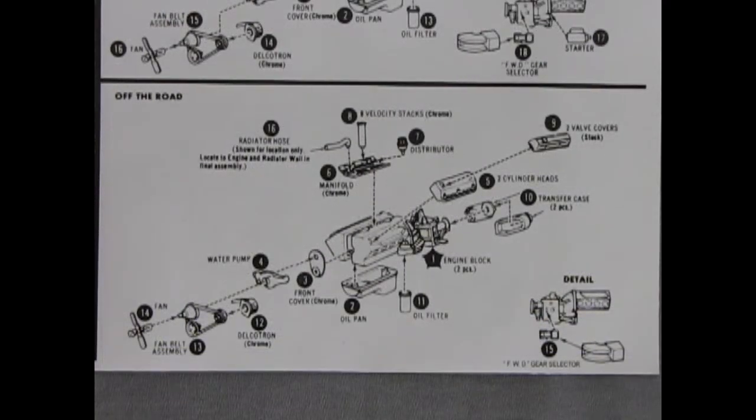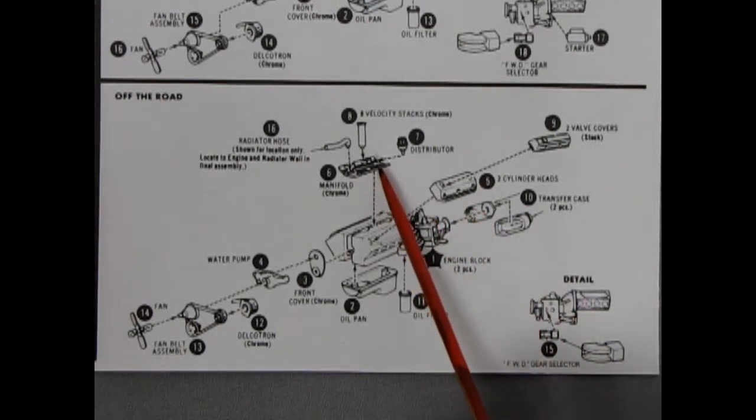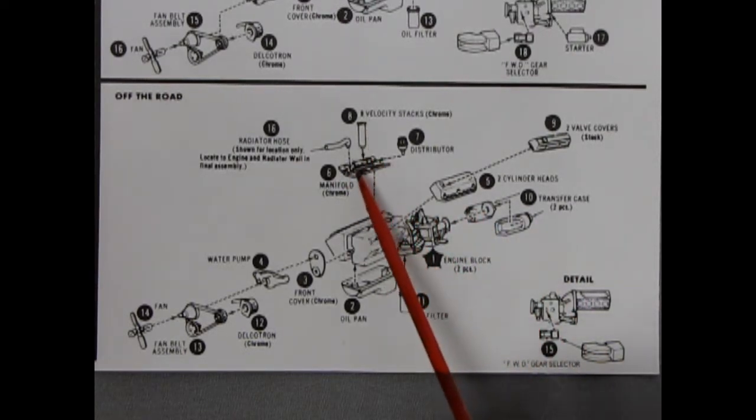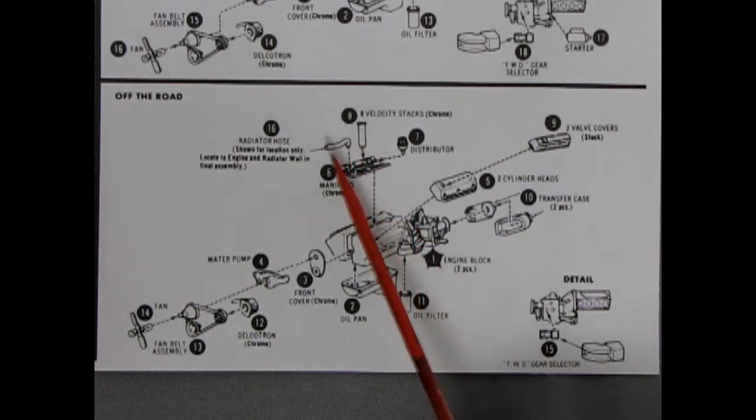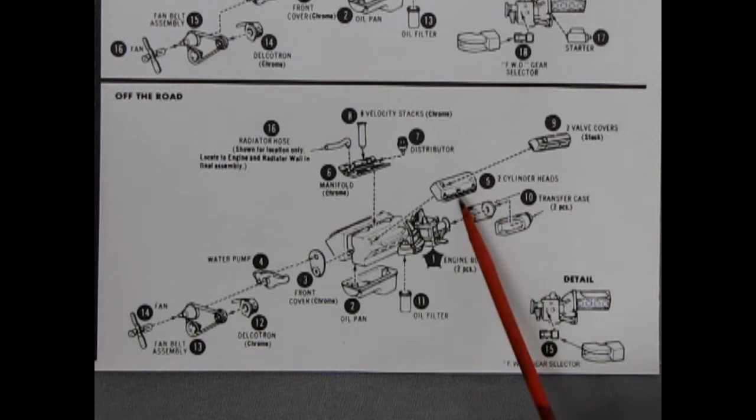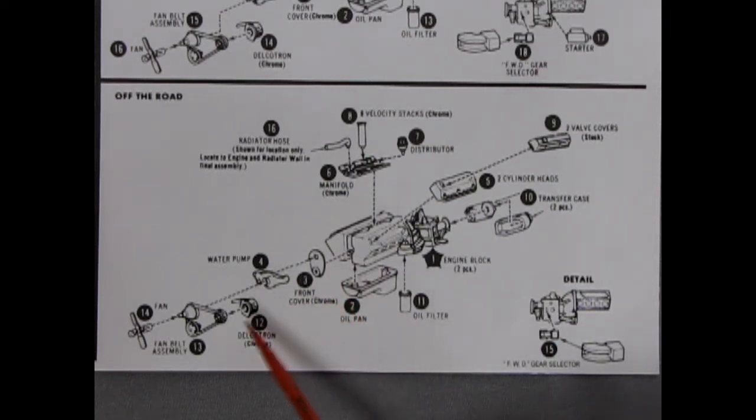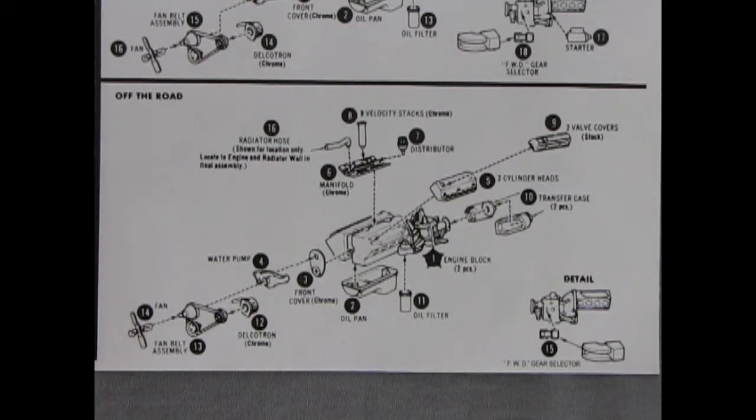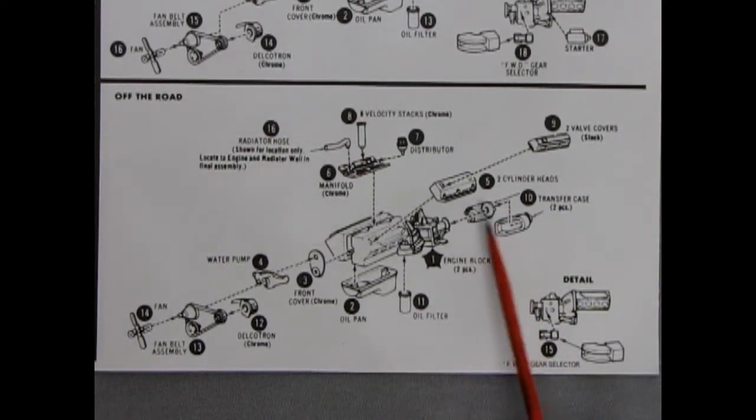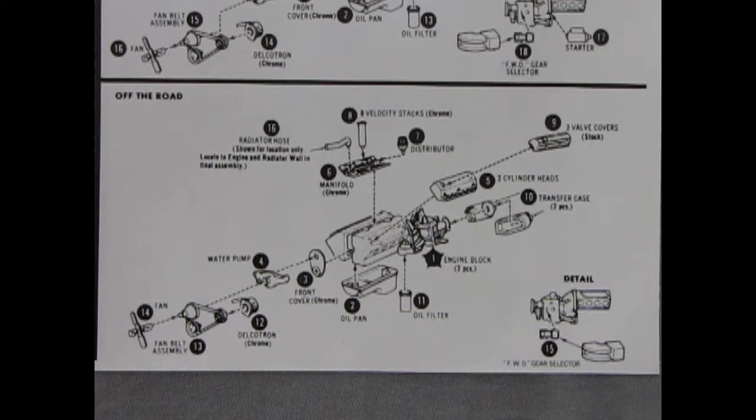Now if you want to give your blazer a little extra oomph into it. Here we have this chrome intake manifold with eight velocity stacks that pop in. Then our upper radiator hose, distributor, valve covers, cylinder head, engine block left and right, oil filter, oil pan, front cover, water pump, the Delcrotron. And then our pulleys, our fan. We have our four-wheel drive gear selector glues on here. Interesting they don't show the starter on there like in the other thing above. And then we've got our transfer case and transfer case front cover. So interesting stuff.